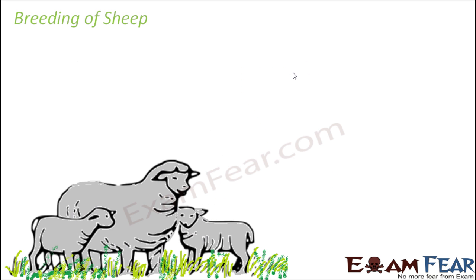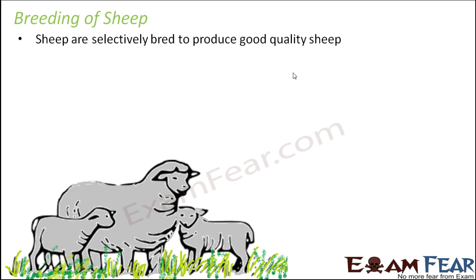The next thing that needs to be taken care of is the breeding of sheep. When we talk about breeding, we talk about good quality sheep which need to be mated so that the new sheep produced are also of good quality. Sheep are selectively bred — meaning we choose good quality sheep and allow them to mate so that their offspring are also of good quality.